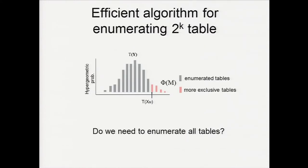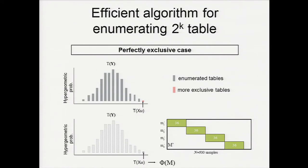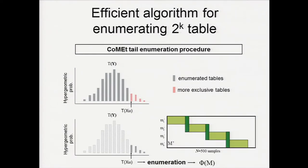We propose a new algorithm that can efficiently enumerate the 2^K table. The intuition is: do we really need to enumerate all tables? We focus on the most interesting case — perfect exclusivity. Since this is an extreme case, the score of this combination is actually equal to the table probability we observe. We come up with a new tail enumeration procedure that enumerates tables starting from the test statistic to the most exclusive case, and sums over them to get the score.